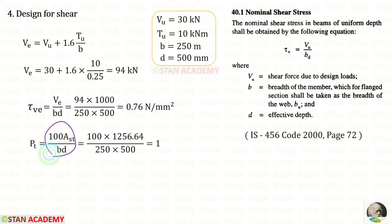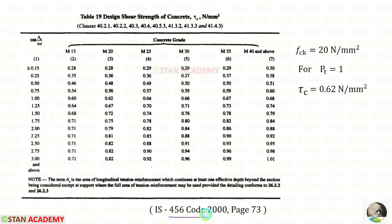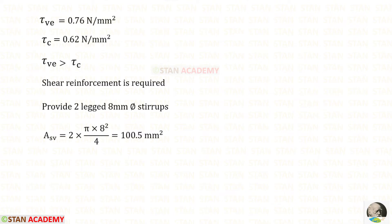Using the formula, we find the percentage of steel in tension. The provided AST is 1256.64 millimeter square. For PT, we will get 1.0 percent. In the code book, we open page number 73. For PT equal to 1 and FCK equal to 20, we select the corresponding value: Tau C is 0.62 N/mm². Since Tau-BE (0.76) is greater than Tau C (0.62), shear reinforcement is required.